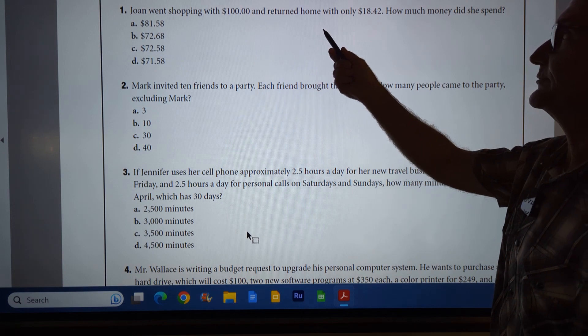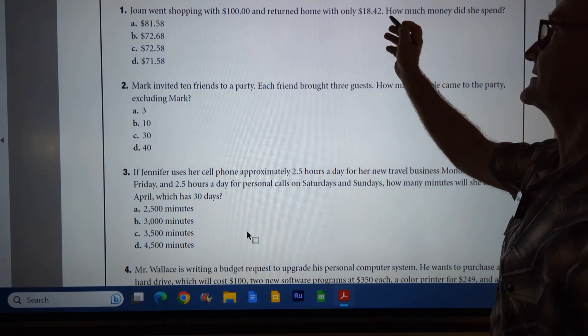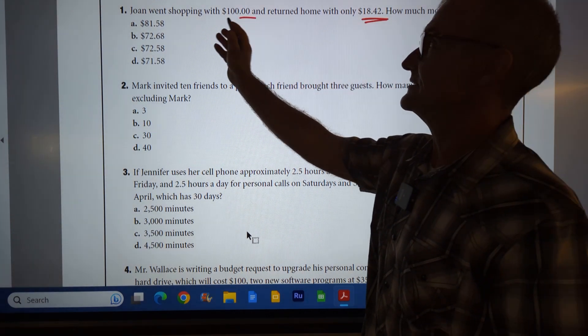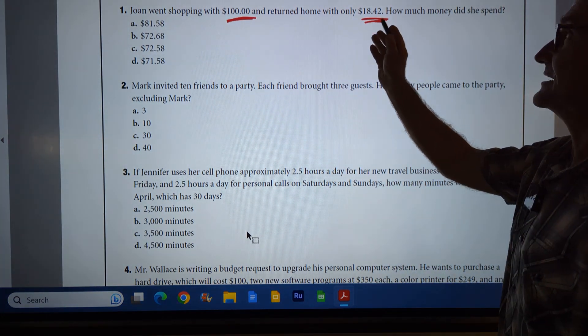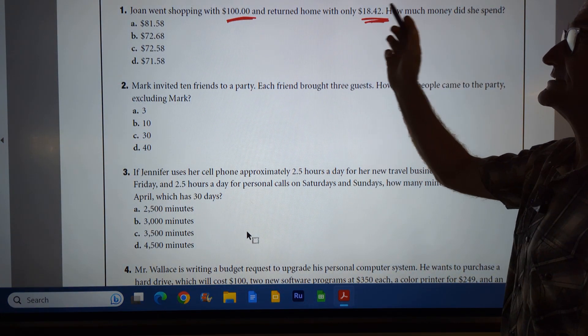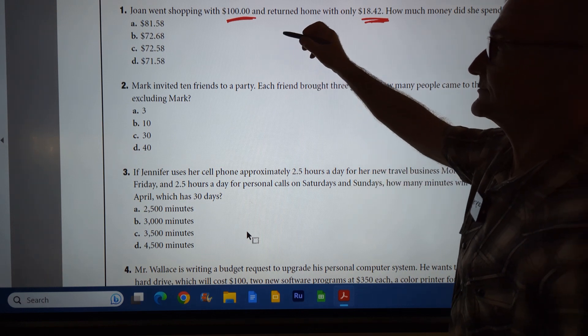Okay, Joan went shopping with a hundred bucks, returned home with only $18.42. So this is where we started. This is how much we came home with. How much did she spend? So it's a subtraction problem.